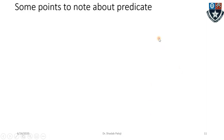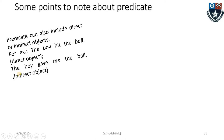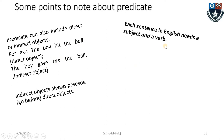Some points to note about the predicate: it can include direct or indirect objects. 'The boy hit the ball' — the boy is the subject, hit is the verb, and the ball becomes the direct object within the predicate. 'The boy gave me the ball' — here 'me' becomes an indirect object. Indirect objects always precede direct objects, so 'me' comes before 'the ball.'